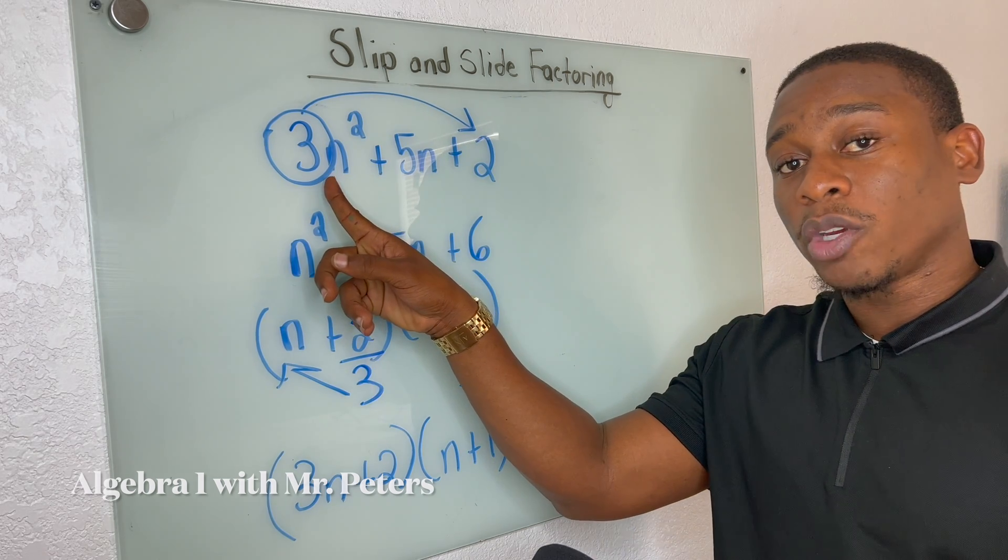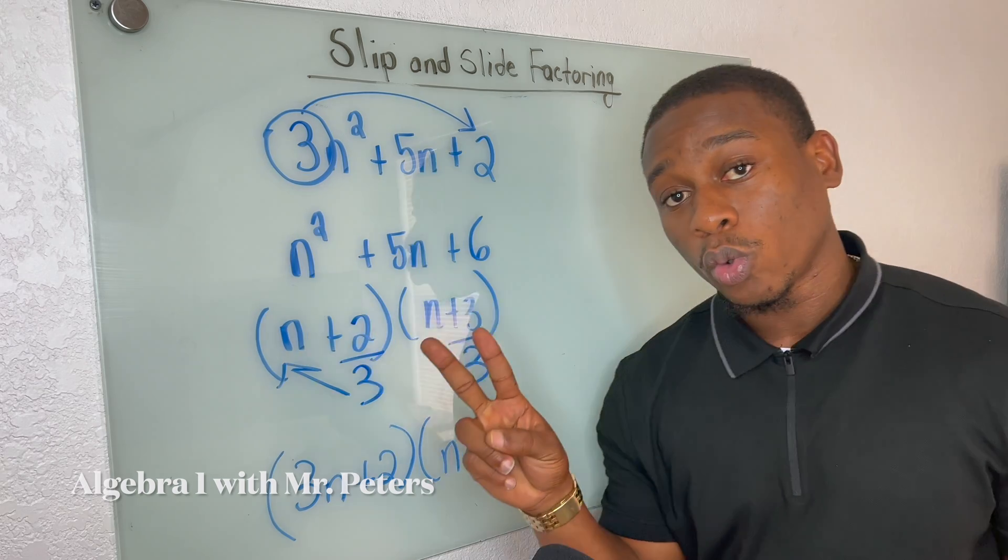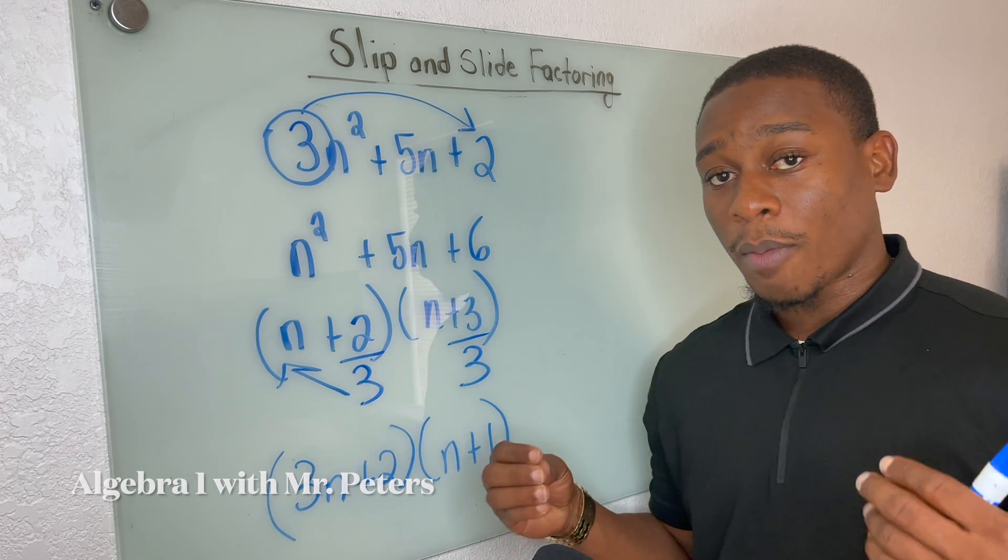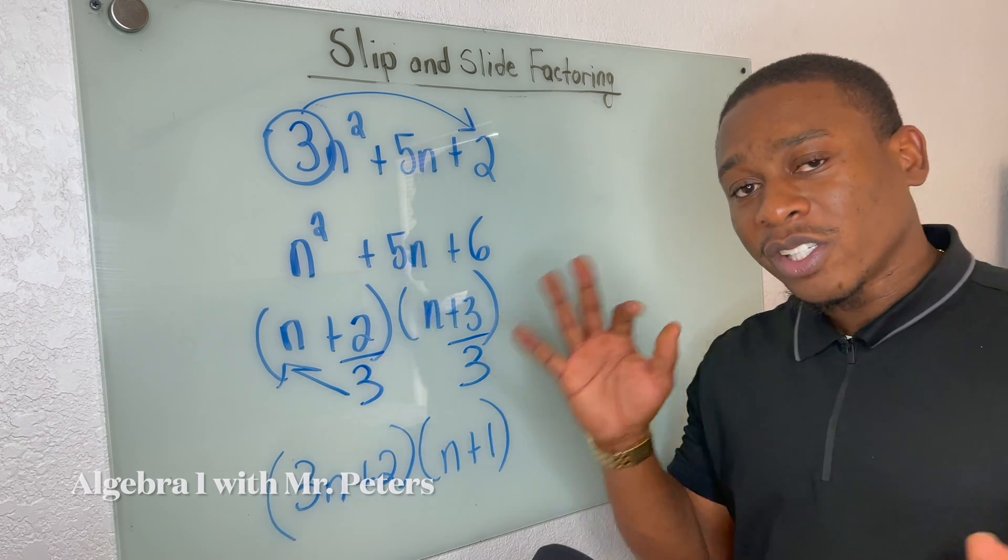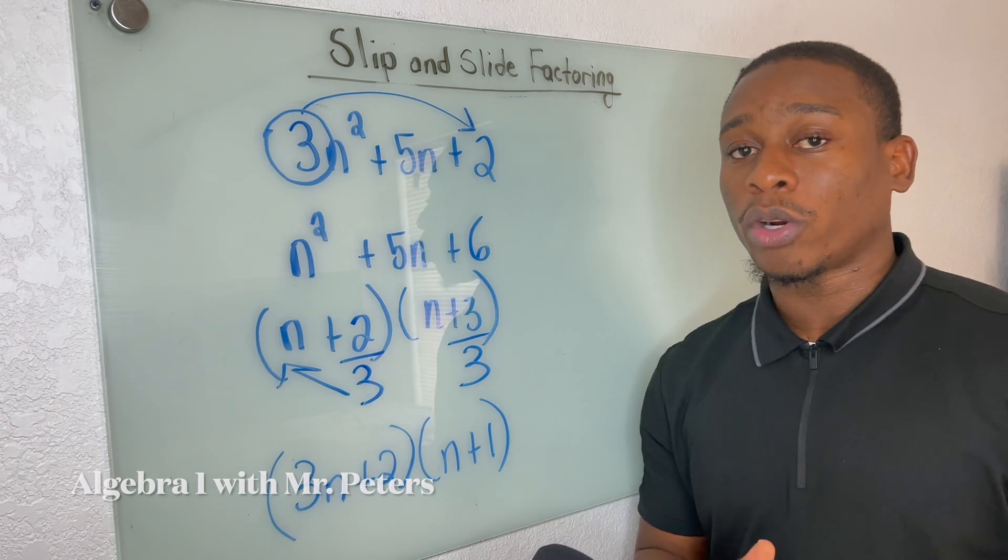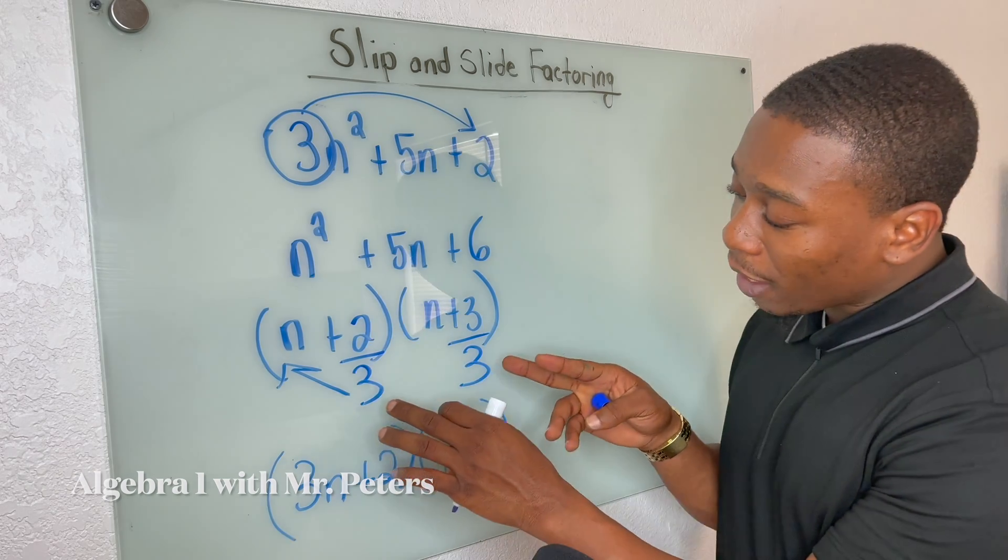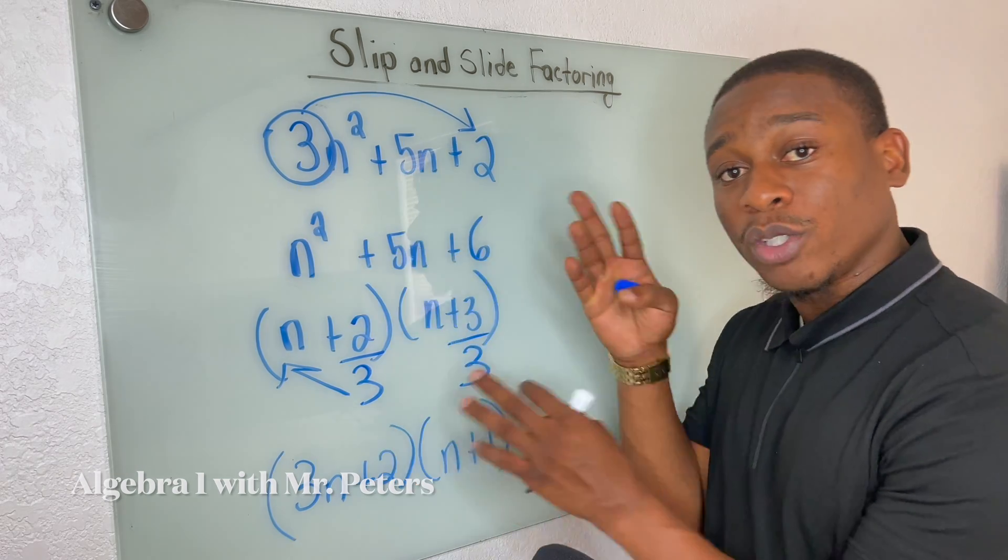One, leading term has to be greater than one. Two, always check for a greatest common factor before you do the slip and slide method, all right? And then three, just at the end, make sure that you go back and divide by that same number that you divided by.